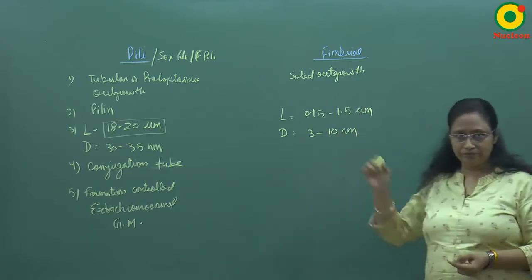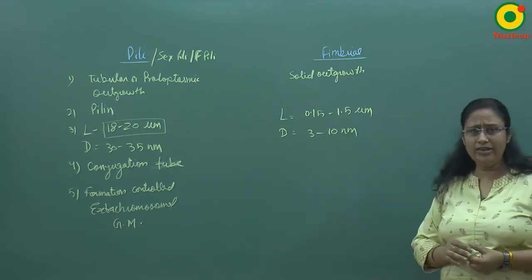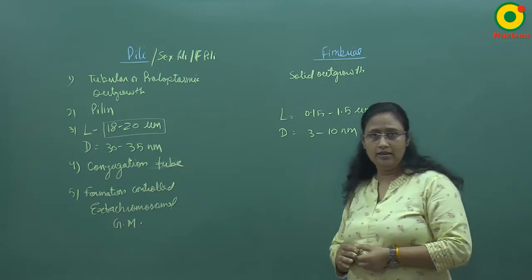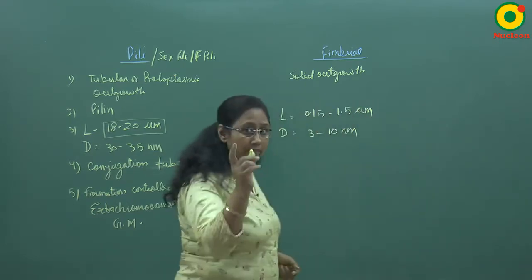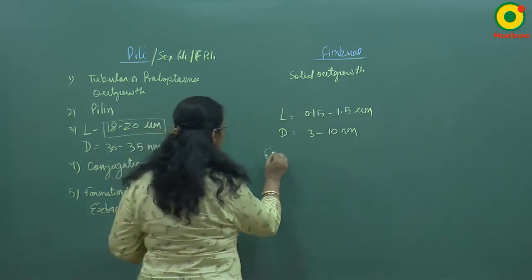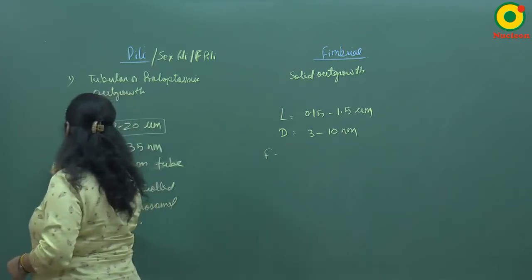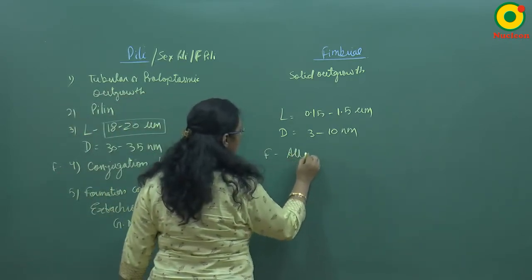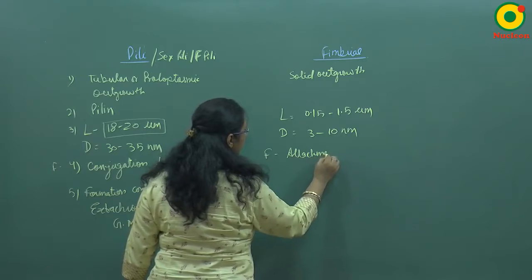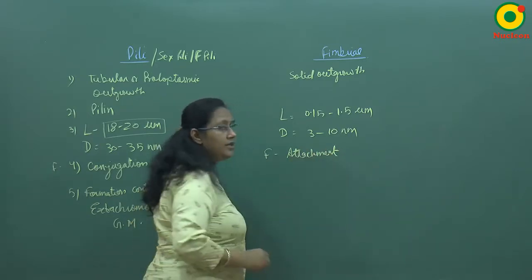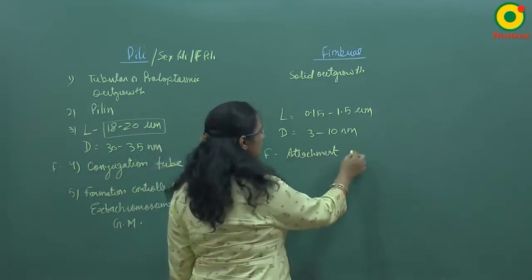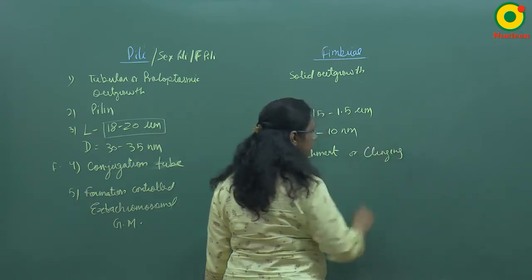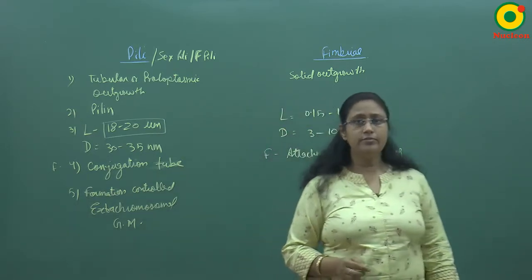Now, what is the function of fimbrae? Fimbrae basically helps in the attachment or clinging of the bacteria to a solid surface.